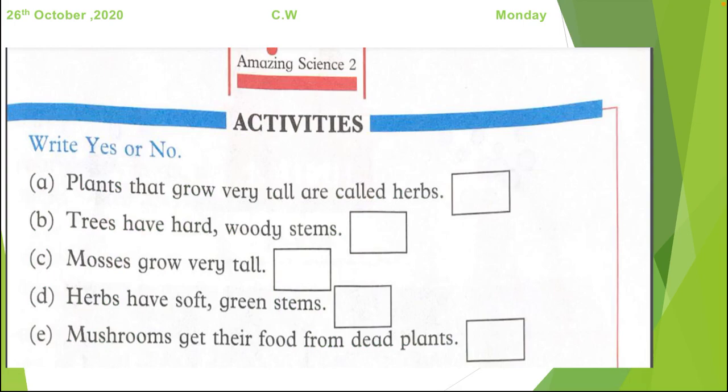Question 1. Write yes or no. So now we have to tell if the statement is true or false. Statement A is: plants that grow very tall are called herbs. So first think about what herbs are.